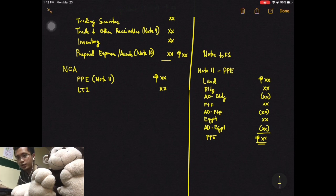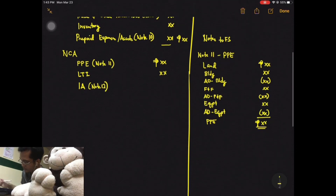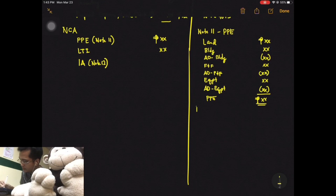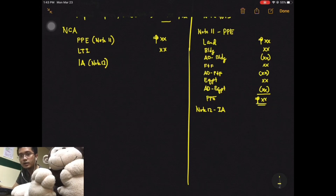Another note under non-current assets, although not frequently asked, is intangible assets. Since we're done with note 11, this is note 12. Note 12 covers intangible assets. While PPE takes in all depreciable assets plus land, intangible assets will take in all assets that can be amortized.